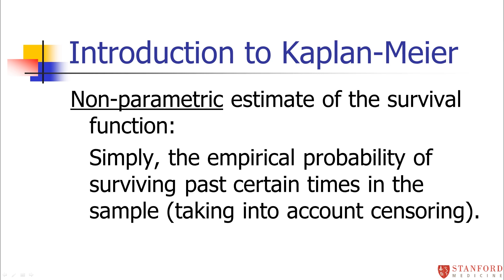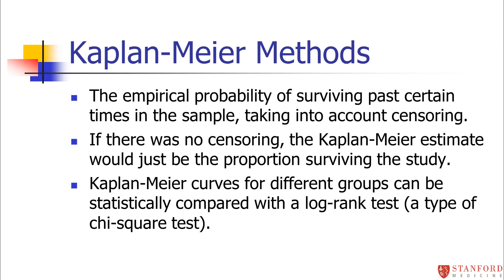If there was no censoring — if people didn't drop out of the study at different times — this would be a very easy thing to estimate. But the trick to Kaplan-Meier is that it's accommodating that censoring. Kaplan-Meier curves can be compared statistically to get a p-value with a log rank test, and a log rank test is just a type of chi-square test.